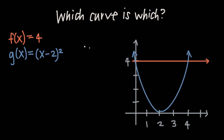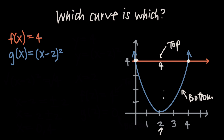We certainly don't need to, but we could sketch both curves to confirm these results. The intersection points at x equals 0 and x equals 4 check out, and between 0 and 4, f is the top curve and g is the bottom curve. When we plug in x equals 2, f of 2 equals 4 and g of 2 equals 0, which the sketch confirms. You don't have to sketch the graphs — you can do it all algebraically — but if you have time it's a great way to double-check yourself.